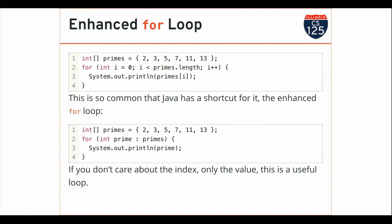The question is: if the last valid index is prime dot length minus one, why does the loop contain the constraint i less than primes.length? You could write it as less than or equal to primes.length minus one — that works exactly the same way. But this is the for loop you'll be able to write in your sleep. At the end of the semester I could tell you I've got an array called foo and you could write this loop. I would suggest you always write it this way — it's how it's conventionally done, and you'll learn to recognize it as the pattern that goes through every value in an array.